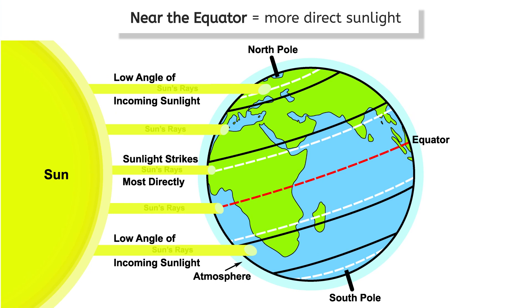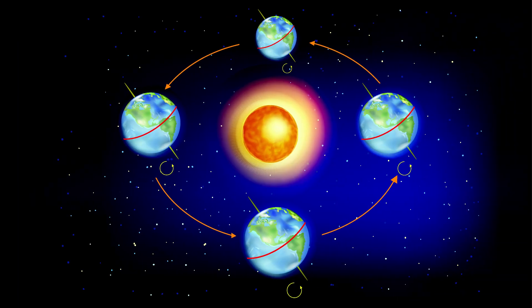Areas near the equator experience warmer temperatures and more consistent sunlight all year, resulting in tropical climates. Polar regions receive less consistent direct sunlight and remain cold. Mid-latitude regions experience distinct seasons, like continental or temperate climates, because Earth's tilt causes different angles of sunlight throughout the year. This variation leads to warmer summers and colder winters.